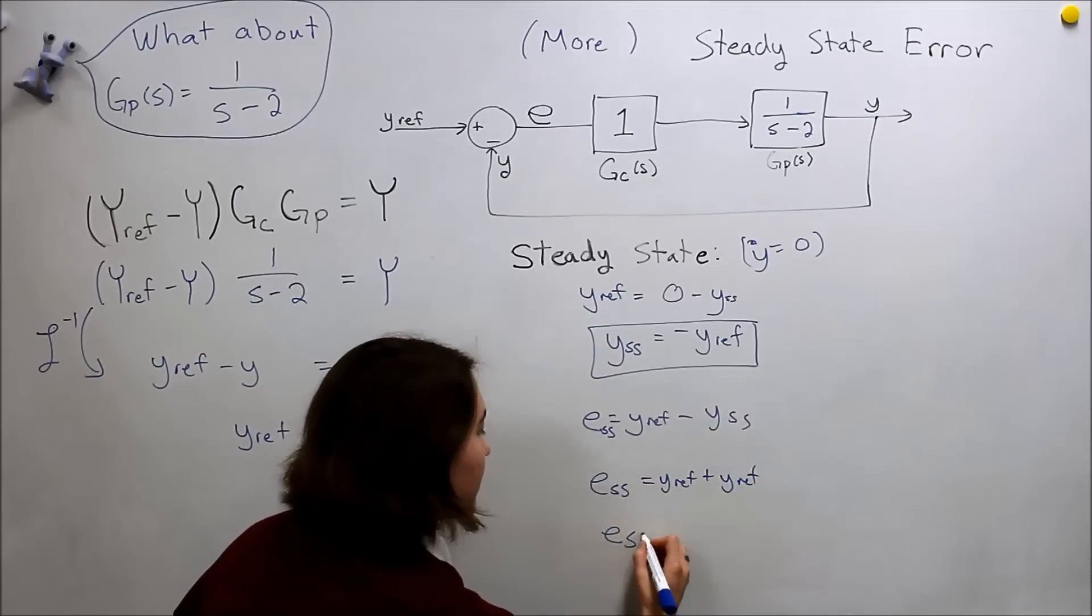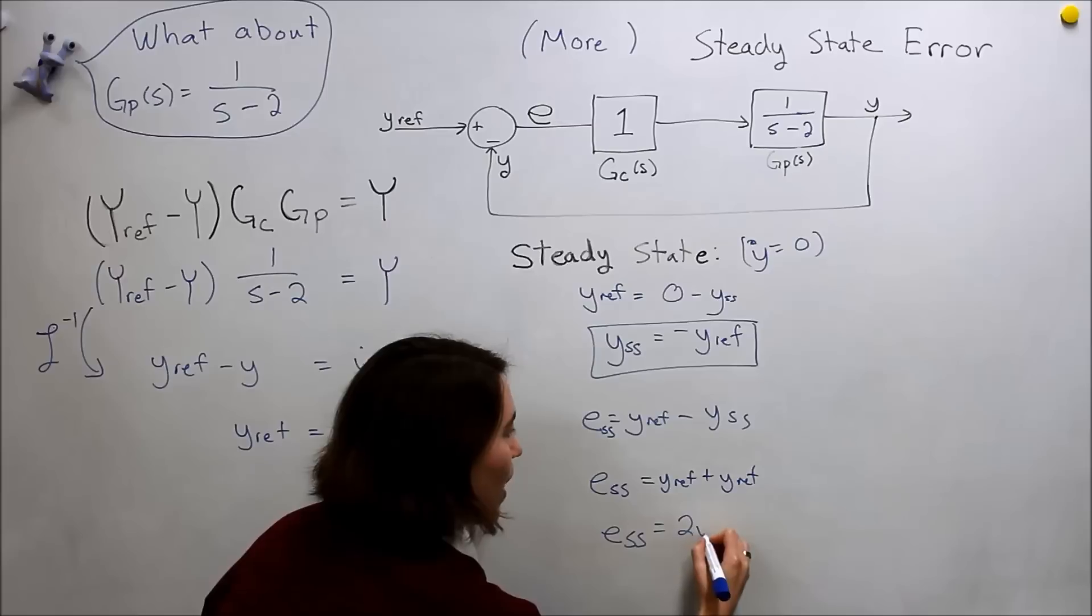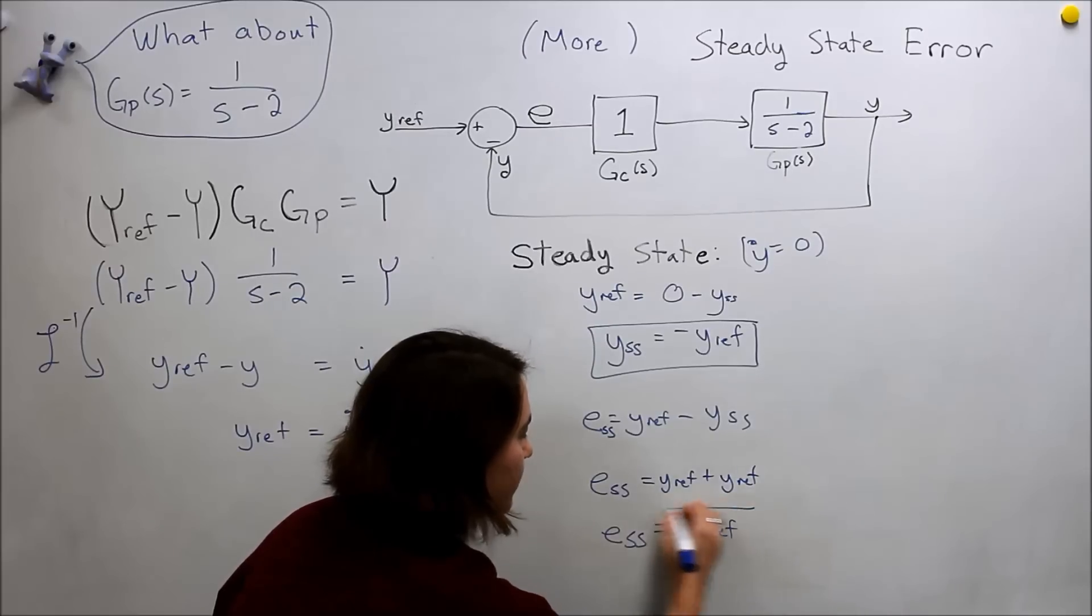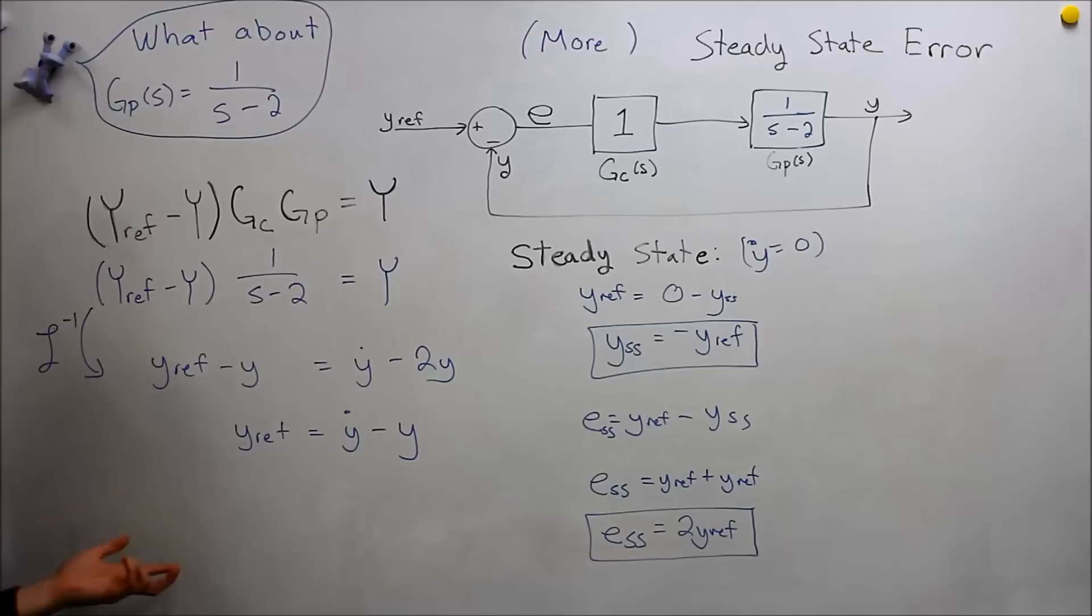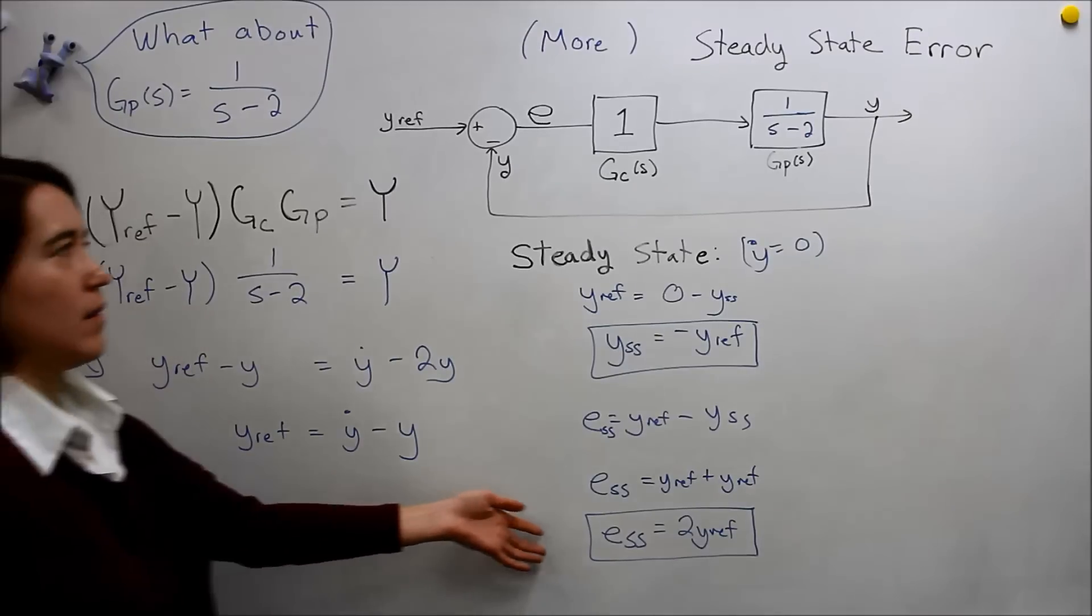So our steady state error would be 2y ref. So we can calculate the steady state values, and we've calculated them here.